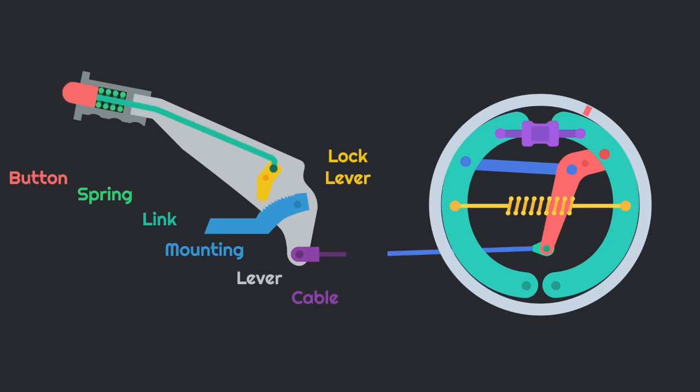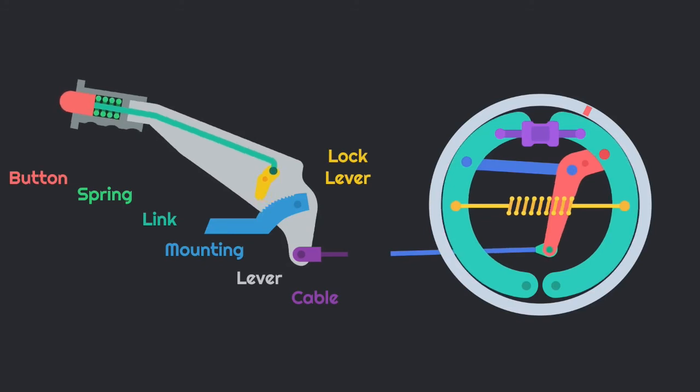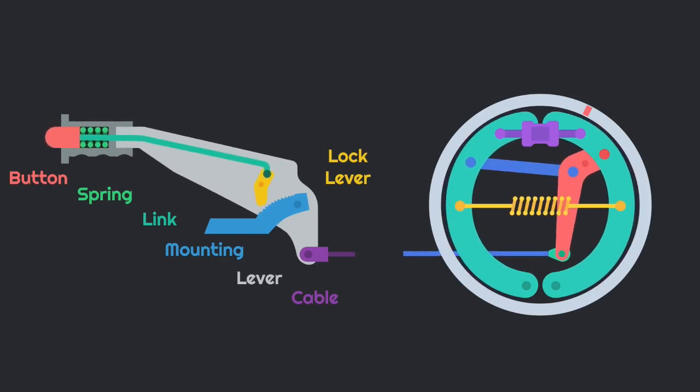So now when the brake pedal will be released with the help of return spring, both of the drum shoes will be automatically go back to their position.